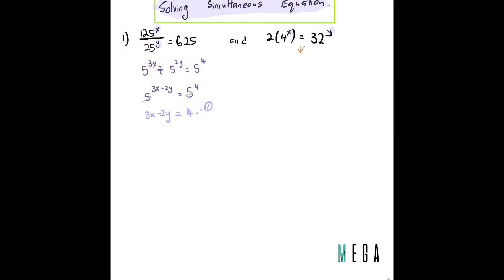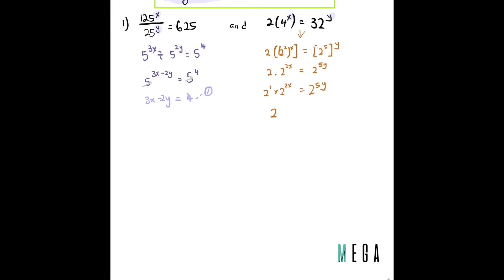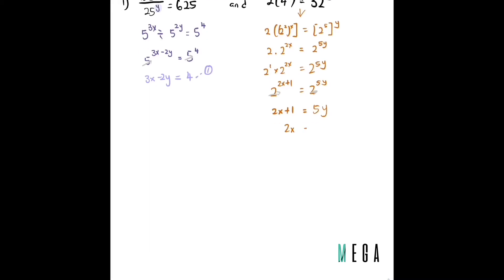For the second equation, I can write it as 2 · (2²)^x = 2^(5y), giving 2^1 · 2^(2x) = 2^(5y). Combining: 2^(2x+1) = 2^(5y). Cancelling the base: 2x + 1 = 5y, so 2x = 5y − 1 and x = (5y − 1) / 2. This is equation two.